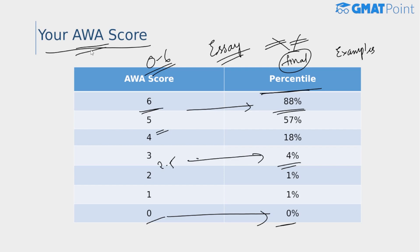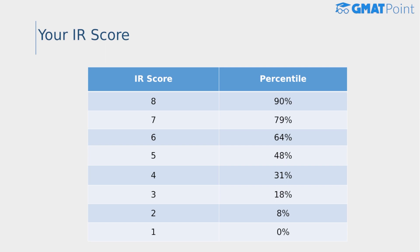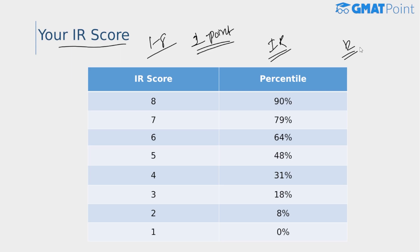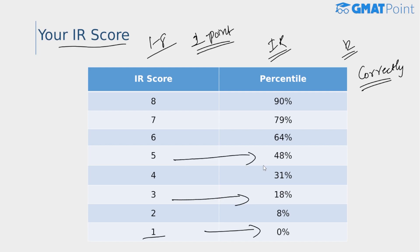The mean AWA score was 4.43. Moving to the Integrated Reasoning section: scores range from 1 to 8 in one-point intervals. IR questions often contain multiple parts, and you must answer all parts of a question correctly to earn the points. Immediately after taking the GMAT you receive an unofficial score report that includes your IR scores. This section has 12 questions, and you are marked based on the difficulty level of questions answered correctly. For a score of 3, percentile is 18; score of 5, percentile is 48; score of 7, percentile is 79; score of 8, percentile is 90. The mean IR score was 4.6.